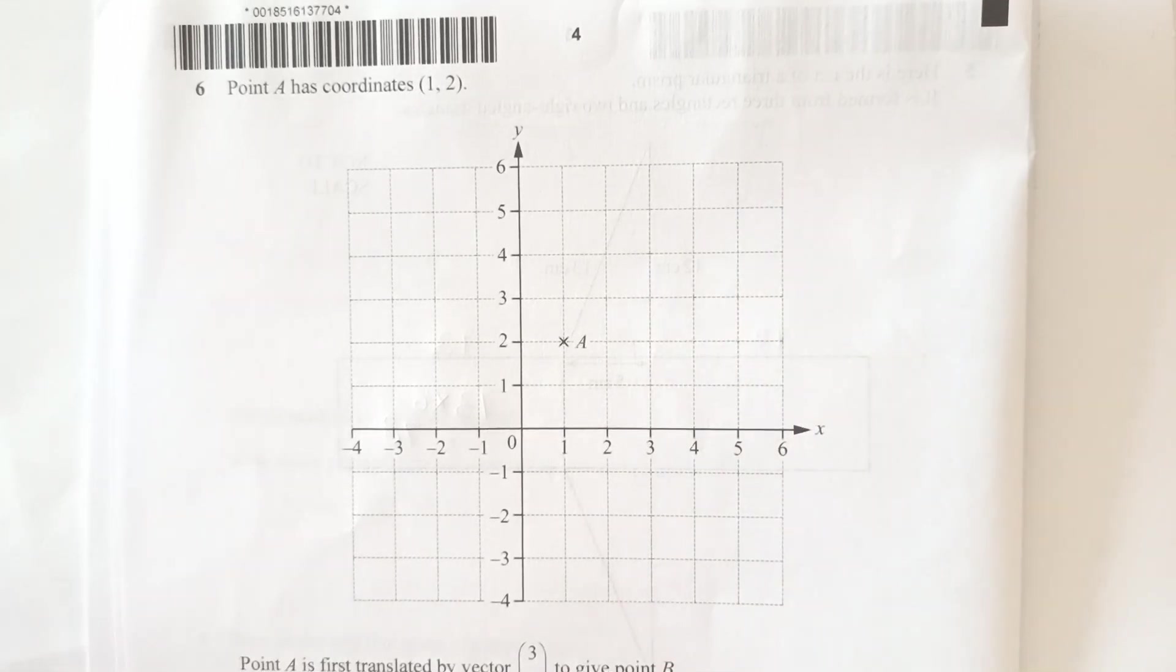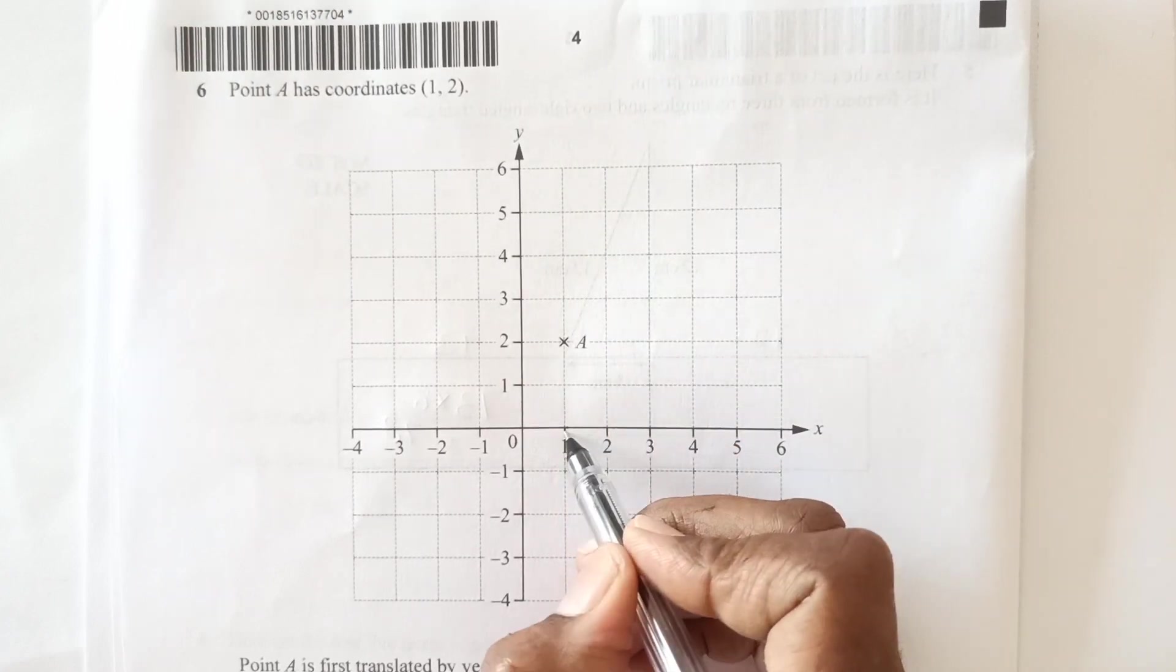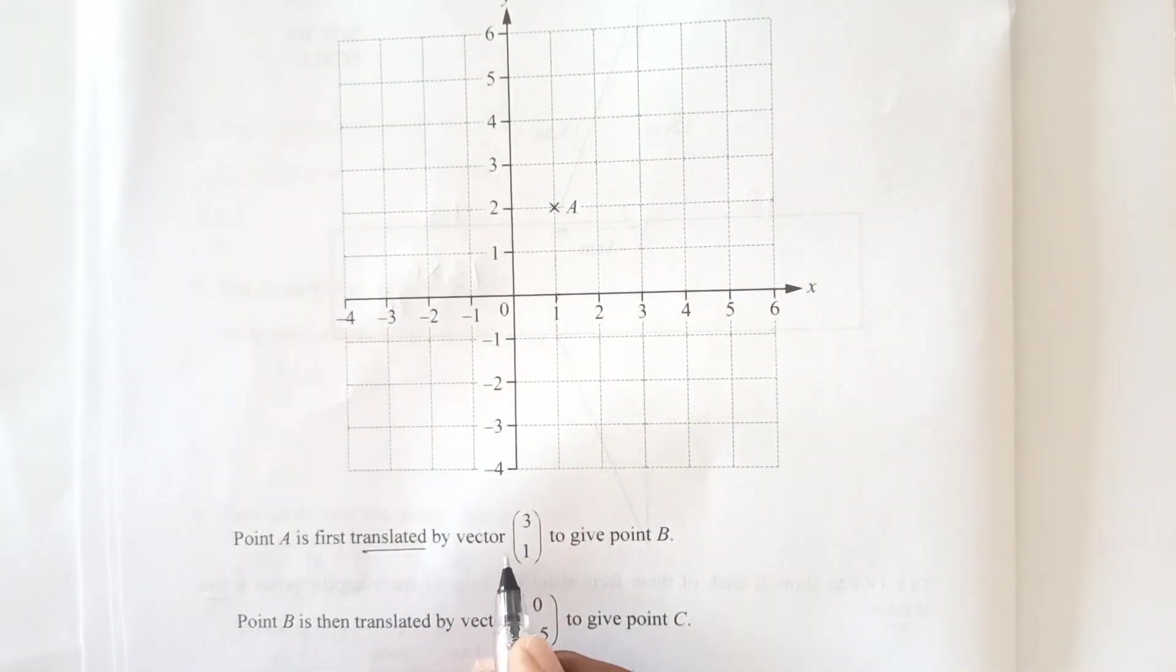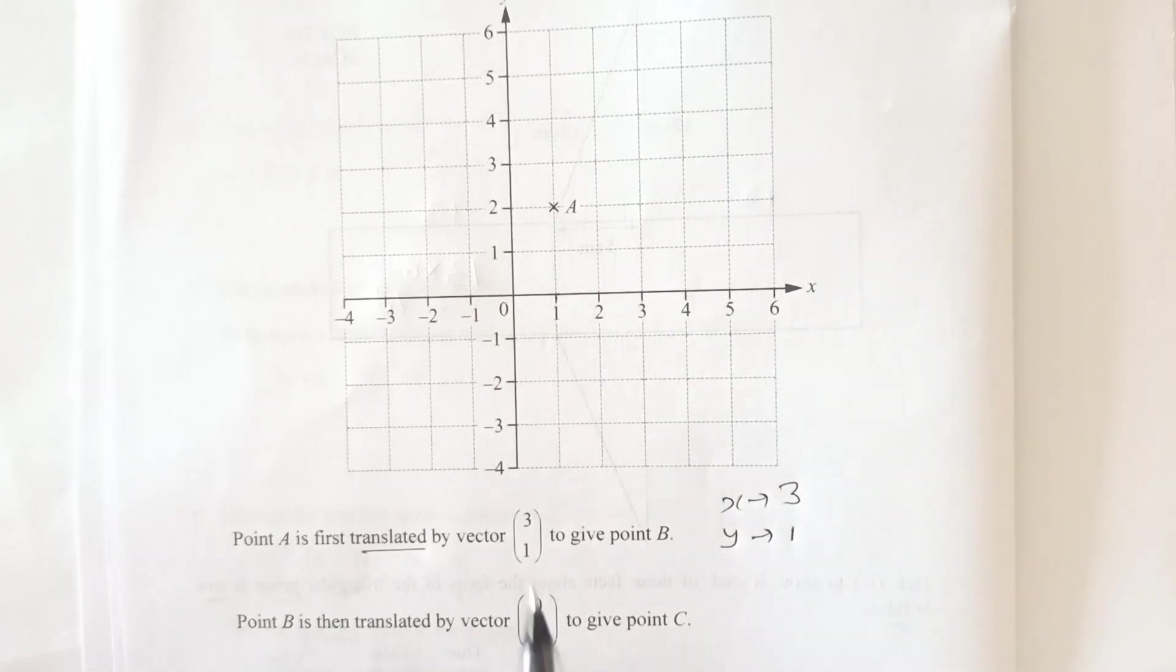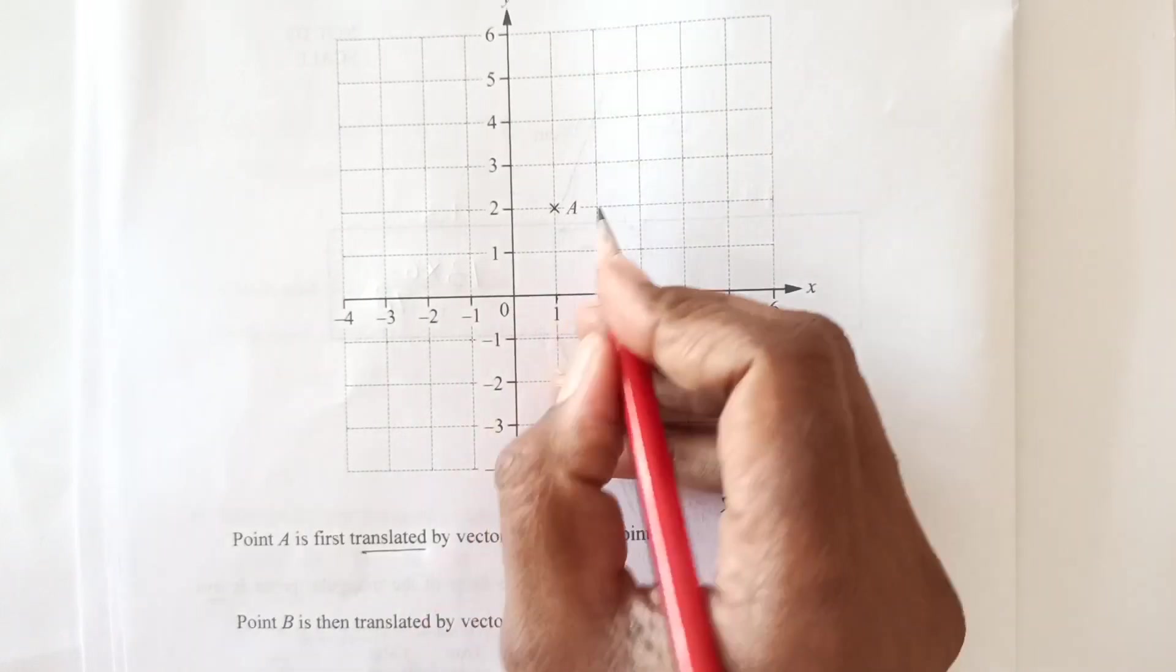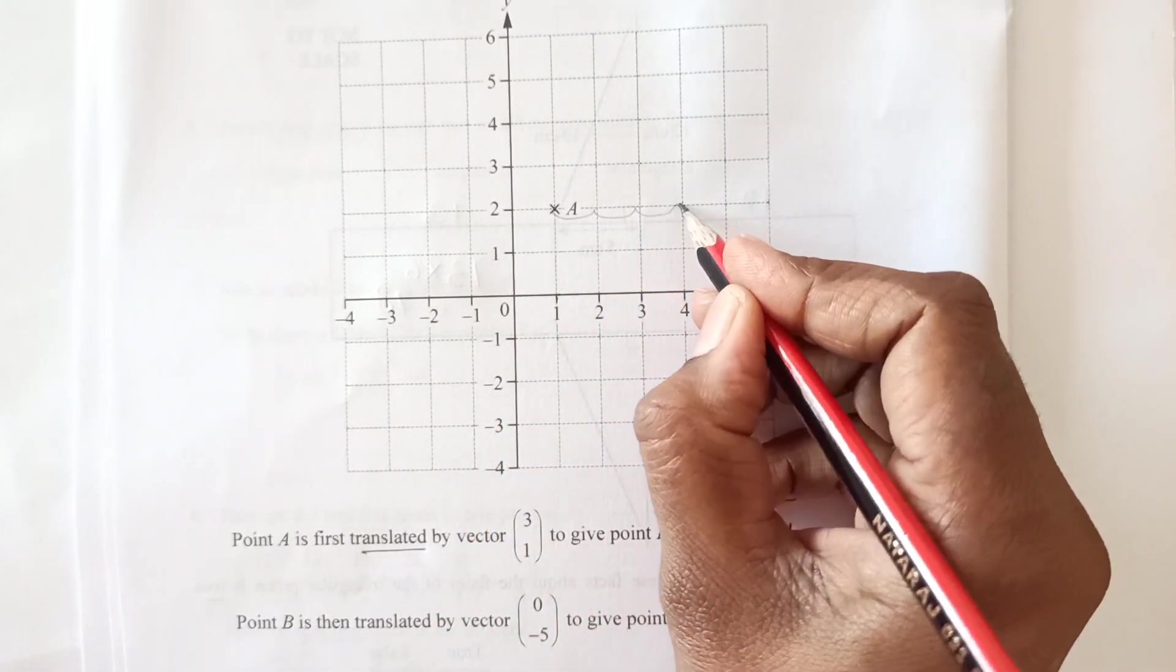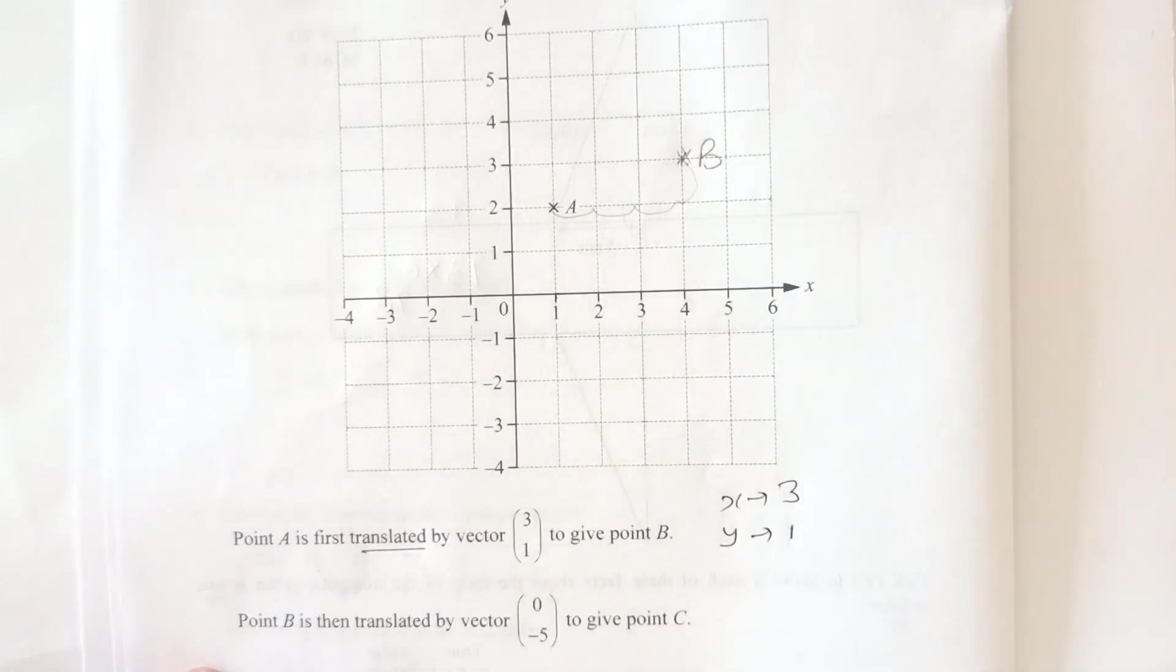Question number 6, point A has coordinates 1 and 2. You see this is point A has coordinate 1 and 2. Point A first translated by vector 3, 1. 3, 1 means 3 x movement is 3 and y movement is 1. So let me move this one 3 units right, it is positive, so it is going to be right. 1, 2, 3. 3 units right and 1 unit up. So A will come over here. So A is translated to give B. So this is now point B.